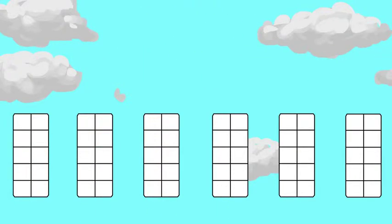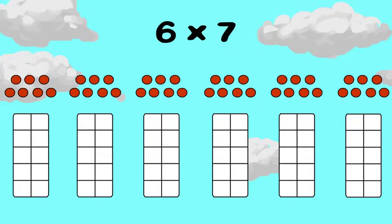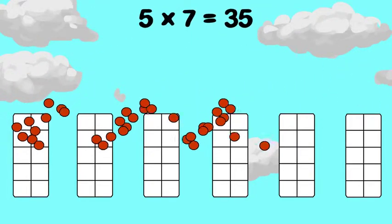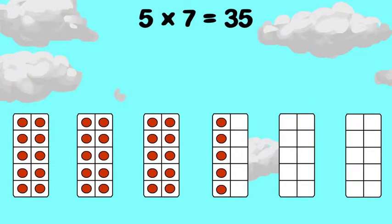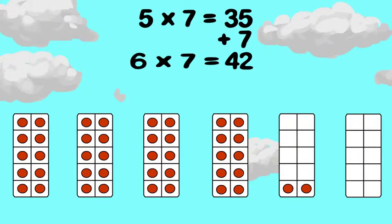Six groups of seven looks hard to find. Remember that five times seven is thirty-five. Add one more group of seven. Thirty-five plus seven is forty-two. So six times seven is forty-two.